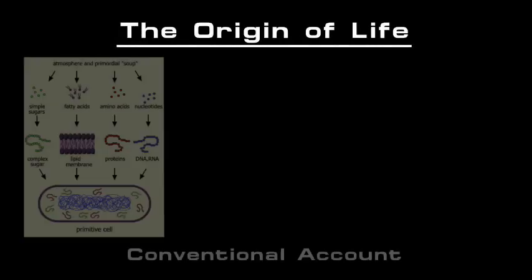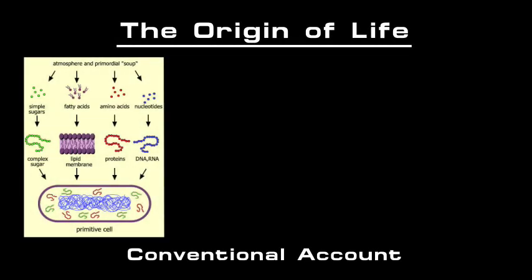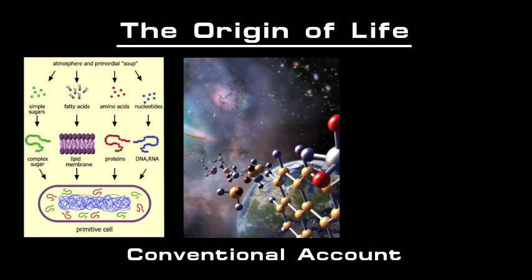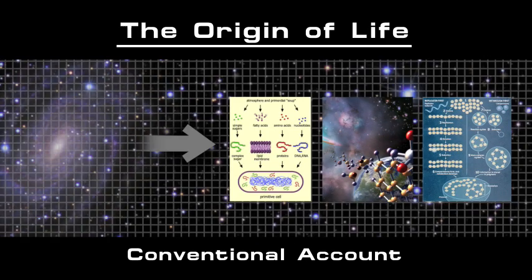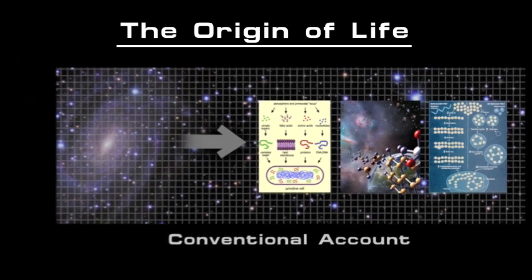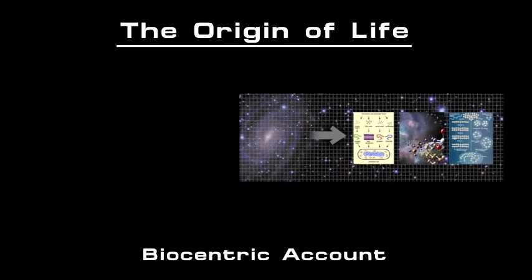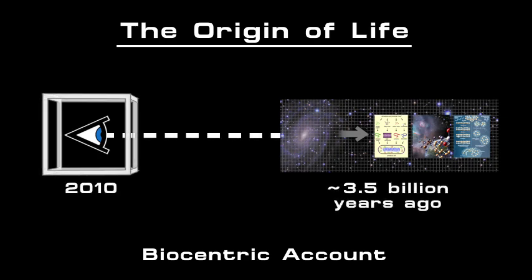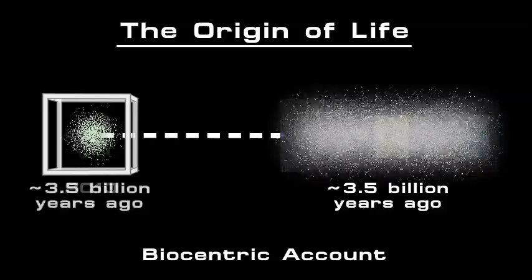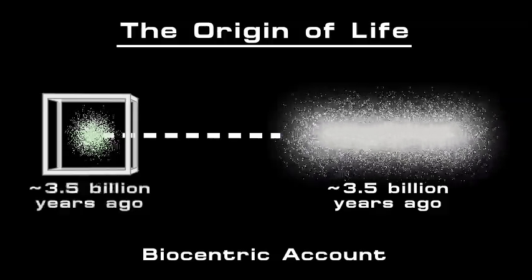In describing the origin of life, the conventional view requires a convergence of highly specific molecules and conditions, not the least of which is a universe allowing the existence of matter in the first place. The biocentric view says that these details are products of our modern perspective, and don't reflect what actually went on in the world of that first life form.